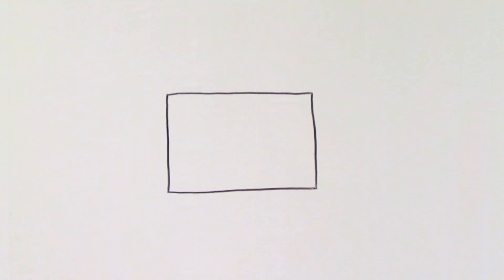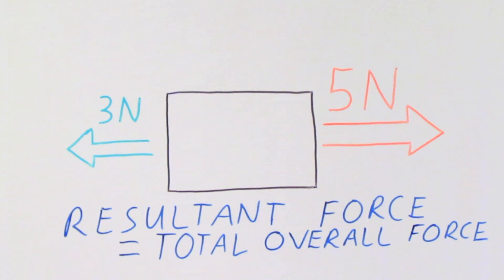Imagine we have an object and it's experiencing a pair of forces. There's three newtons pulling it to the left and there's five newtons pulling it to the right. What is the resultant force on this? Resultant force just means the total overall force acting on an object. So there's these two forces acting against each other and all you do is subtract one from the other. It's that simple.